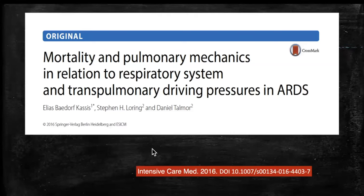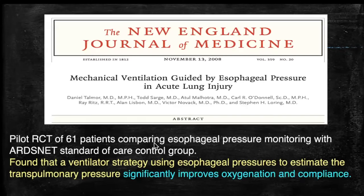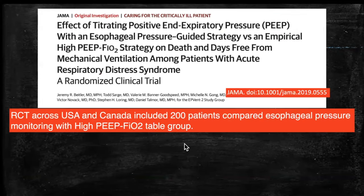Studies have shown benefits of this trans-pulmonary driving pressure concept, demonstrating that keeping it below 10 appears useful in reducing ventilator-induced lung injury. The EPVent-1 trial, a pilot study published in 2008, showed usefulness of titrating PEEP via esophageal pressure monitoring, improving oxygenation and compliance. The subsequent EPVent-2 trial, published in JAMA in 2019 — an RCT of over 200 patients across the USA and Canada — showed no significant difference in death and ventilator days.